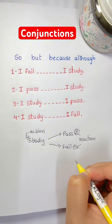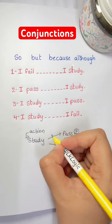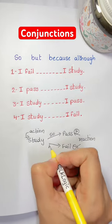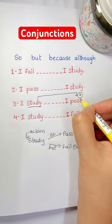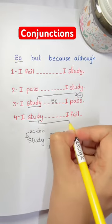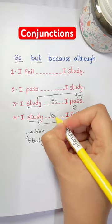Clear? Now look, if the action leads to a positive reaction, use so. If the action leads to a negative reaction, use but. Like here, the action leads to a positive reaction here, so we use so. But here the action leads to a negative reaction, so we use but.